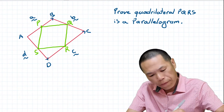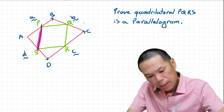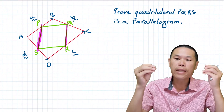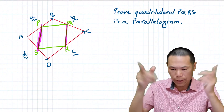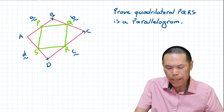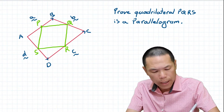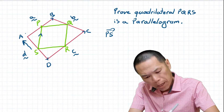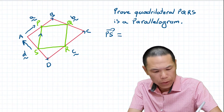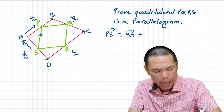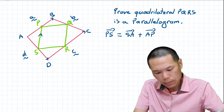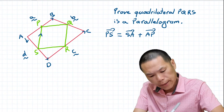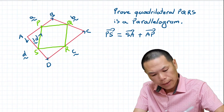We're going to prove vector SP is equal to vector RS. If the vectors are equal, this means they have the same direction and magnitude. So first, let's find vector PS. Vector PS equals vector SA plus vector IP. We know that S is the midpoint of ID, so vector IS is a half of D, and vector SD is a half of D. Similarly, P is the midpoint of IB, so vector IP is a half of I.